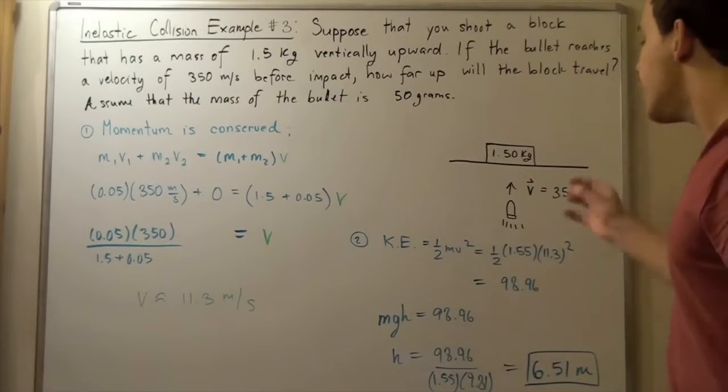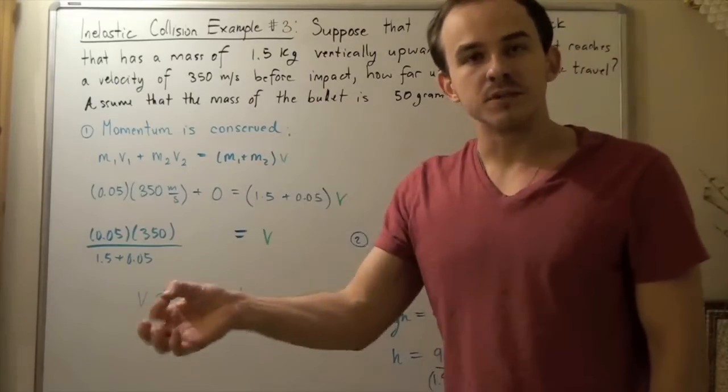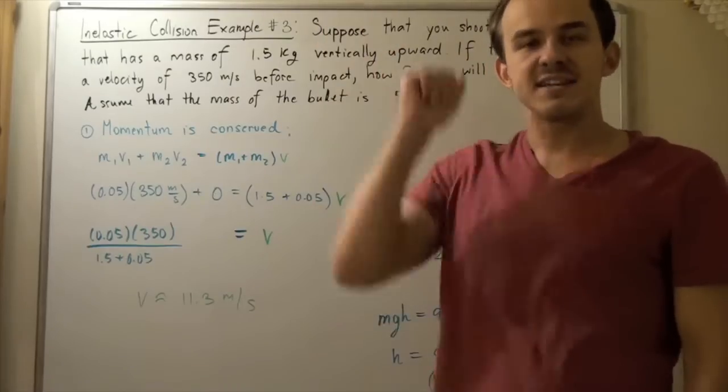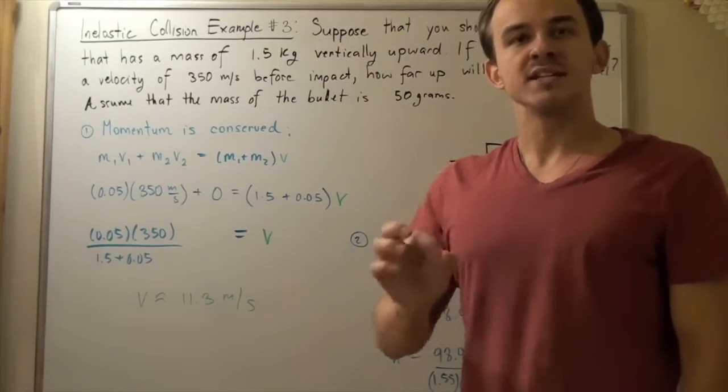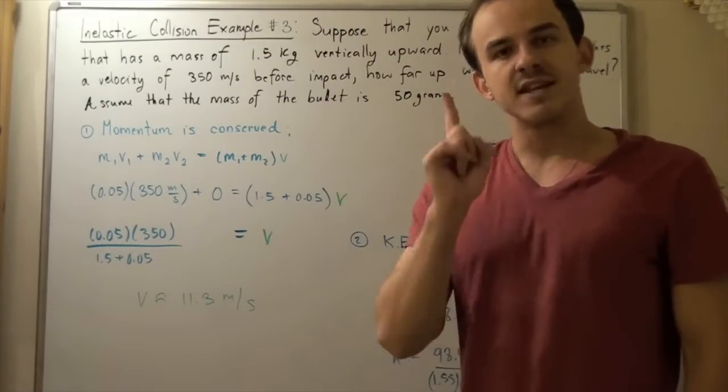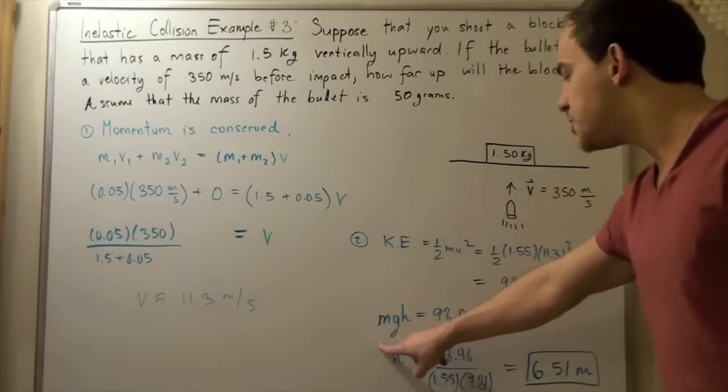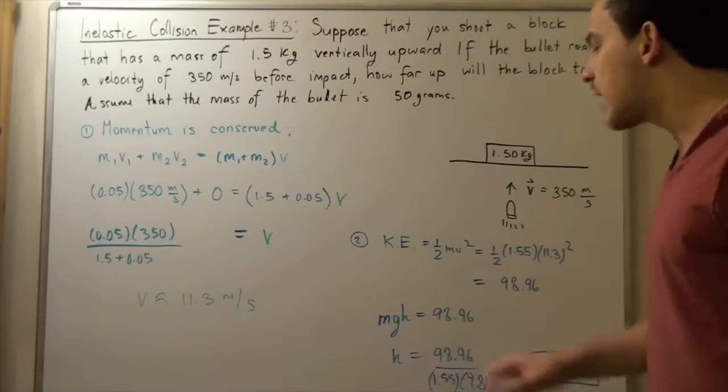When all that kinetic energy is transformed into potential energy, that represents the highest height. In other words, that represents the point at which our velocity is 0. So we simply equate this amount to mgh and then solve for h.